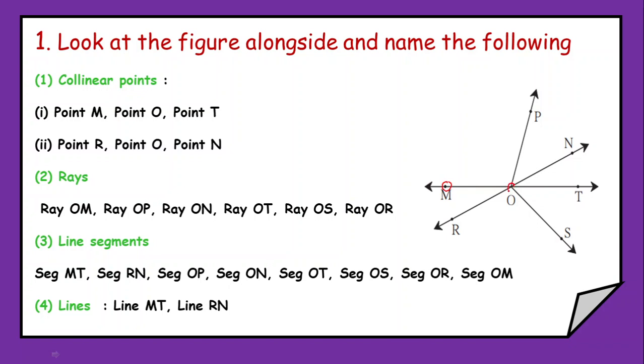Now see here in the figure, point M, O and T, they lie on the same line. So they will be the collinear points. Similarly, point R, O and N, they also lie on the same line. So even they are going to be the collinear points.